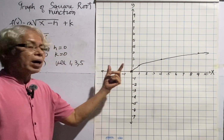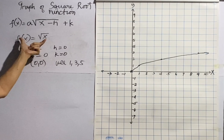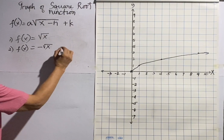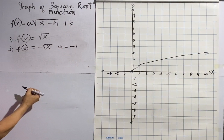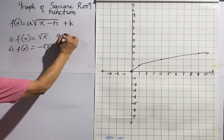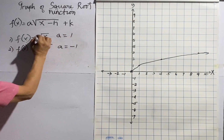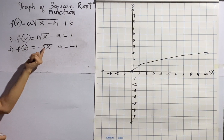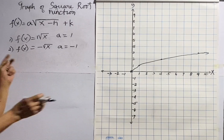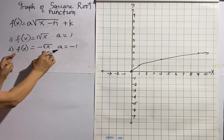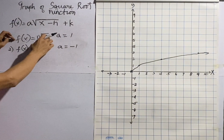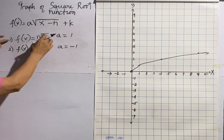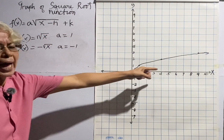Let us have another example. This time the value of a is negative. If you noticed, the value of a in our first example is positive one. In our second example it is negative one. The graph of this function is similar to the first function, only it is a reflection of that graph with respect to the x-axis.